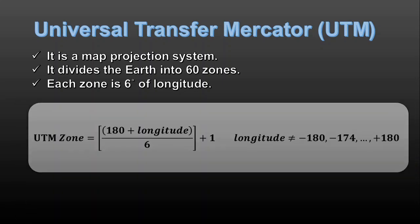If you want to calculate the zone number, we can easily add 180 to the longitude of our point, divide by 60, and then the floor of this number plus one will indicate the number of the UTM zone.